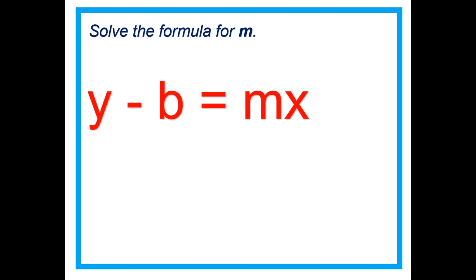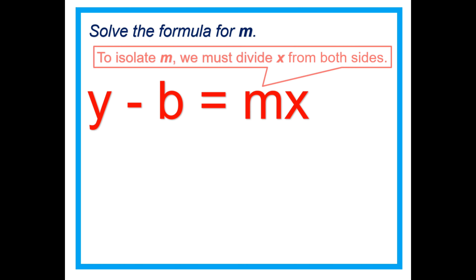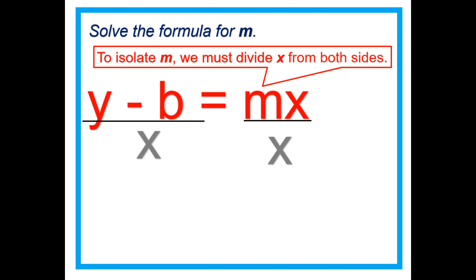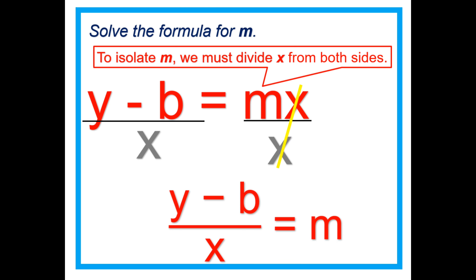We're not yet done because M is not yet isolated. To isolate M, we must divide X from both sides: MX divided by X, and Y minus B divided by X. That cancels X, giving us Y minus B divided by X equals M.